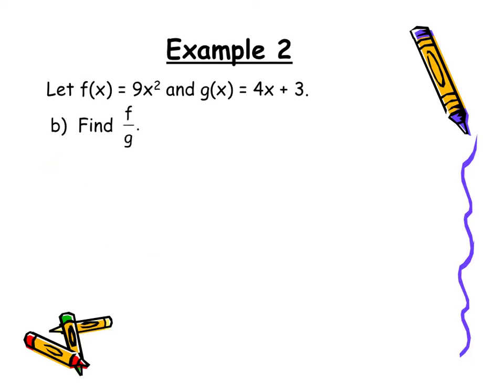For quotient there's a couple parts to it. Sometimes it gets a little bit in depth. With this one it shouldn't be too bad. First off we have our f of x divided by our g of x. So when I plug those two functions in I have 9x squared over 4x plus 3.